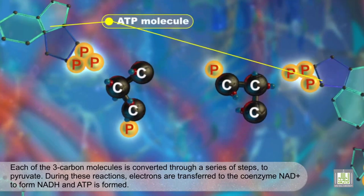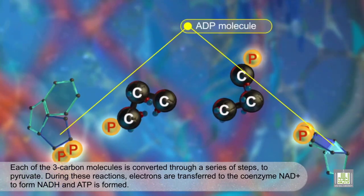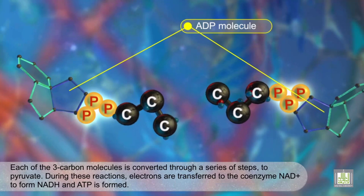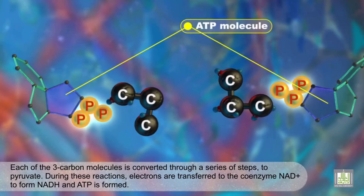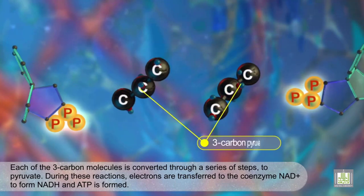During these reactions, electrons are transferred to the coenzyme NAD+, to form NADH, and ATP is formed.